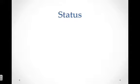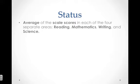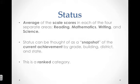There are five components that make up NEPAS. The first one is status. Status is the average of scale scores in four separate areas of content: reading, math, writing, and science. It can be thought of as a snapshot of the current achievement improvement by grade, building, district, and state. This is a ranked category.